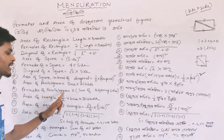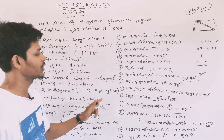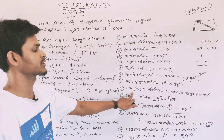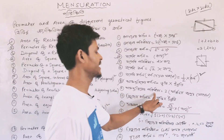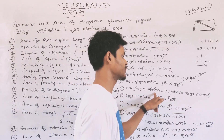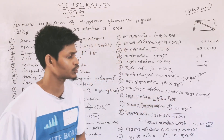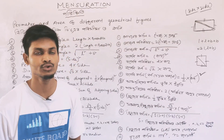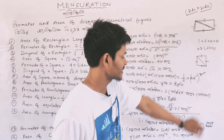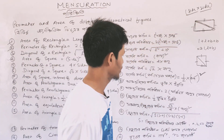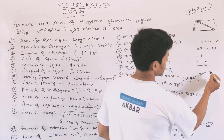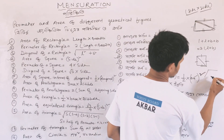Perimeter of parallelogram: the perimeter of a parallelogram, in terms of two adjacent sides, we will see that it is 2 times the sum of adjacent sides.